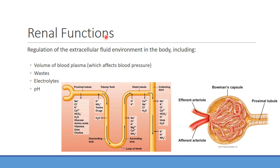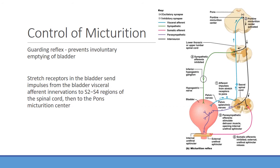In summary, the kidneys regulate the extracellular fluid environment including blood volume, which directly affects blood pressure. They eliminate waste products, regulate electrolytes, and help regulate pH. These are the main things we'll be discussing in more detail. First though, we're going to talk about micturition — hopefully everyone took a bathroom break, otherwise this might get triggering.